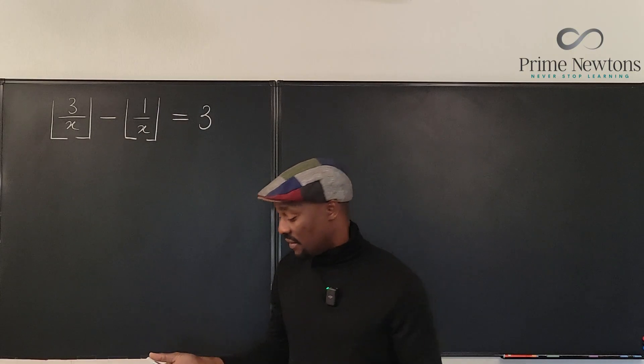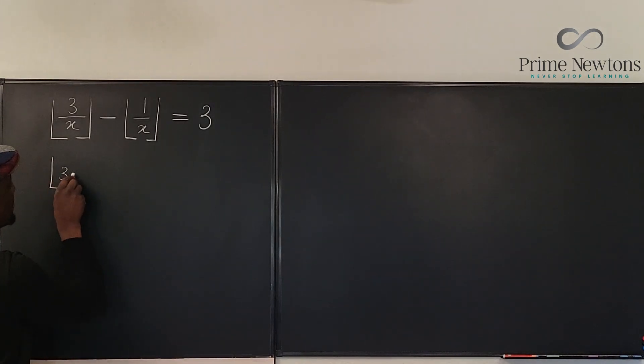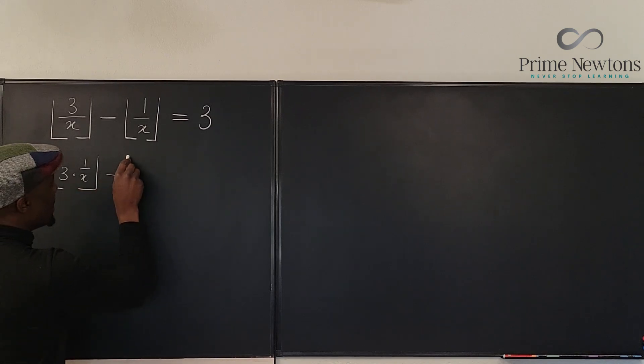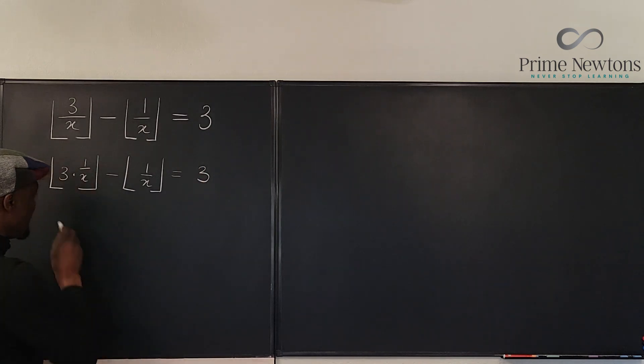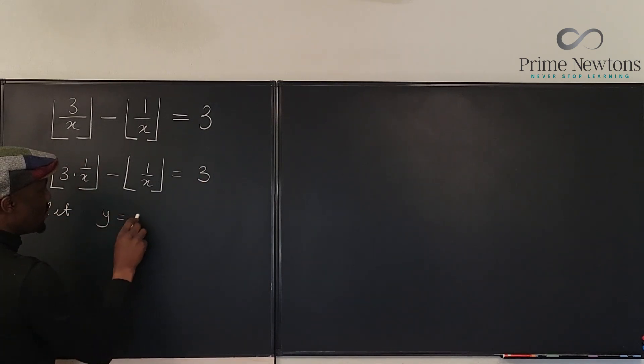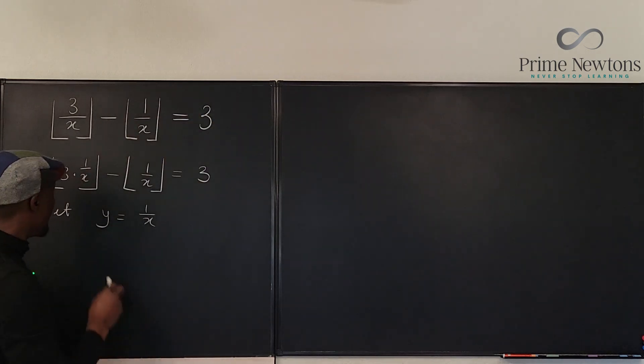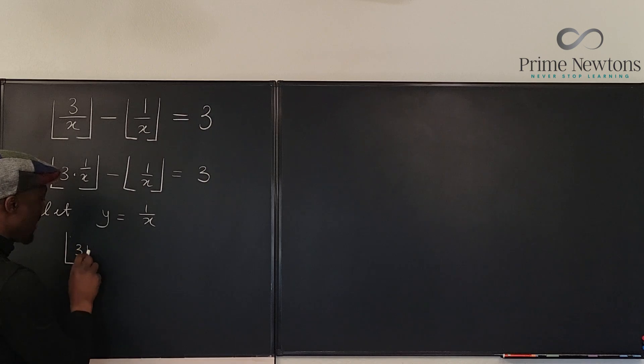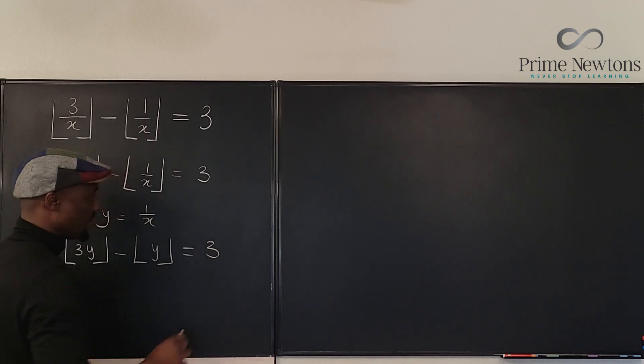So let's rewrite what we have here. We know that this is going to be the floor of 3 multiplied by 1 over x minus this 1 over x, and it's equal to 3. So we can say let y be equal to 1 over x, so that the original problem becomes the floor of 3y minus the floor of y is equal to 3.